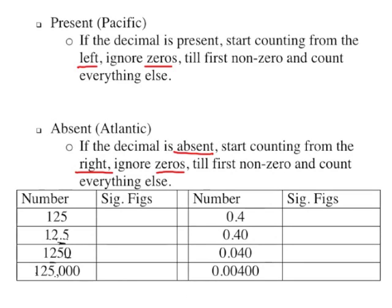Let's take a look at our first one: 125. Is the decimal present or absent? It is absent. Here is 12.5 — the decimal is present. One thousand, two hundred and fifty — is the decimal present or absent? Yes, absent. And then 125,000 — present or absent? It's absent.